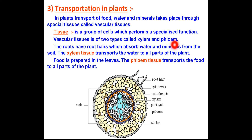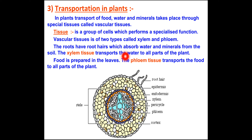Vascular tissue is of two types: xylem and phloem. The roots have root hair — small thread-like structures on the root — and the function of root hair is to absorb water and minerals from the soil. The xylem tissue transports this water and minerals to all parts of the plant. The phloem tissue transports the food prepared by the leaves to all parts of the plant.